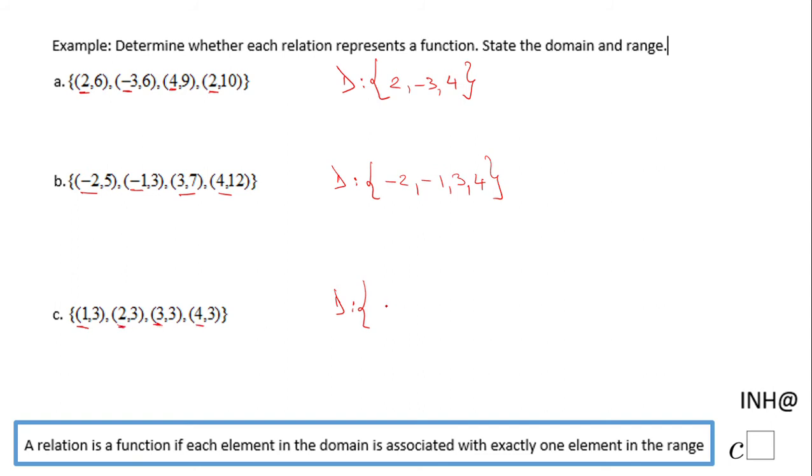Negative 2, negative 1, 3, and 4. And for the last one, the domain will be 1, 2, 3, 4.